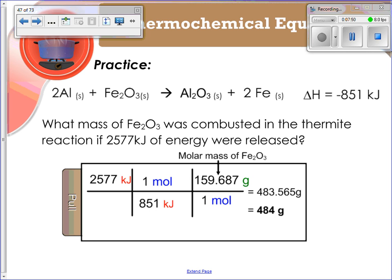So the question said, what mass of Fe2O3, or iron 3 oxide, was combusted in the thermite reaction if 2,577 kilojoules of energy were released? So that's our given, 2,577 kilojoules. Then we know that for every 851 kilojoules, okay, we have 1 mole of Fe2O3. So where is that? Right here. Fe2O3, okay?